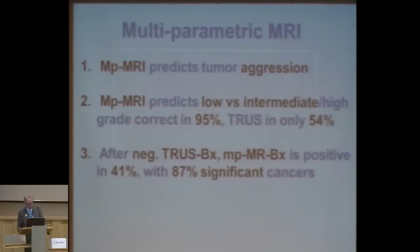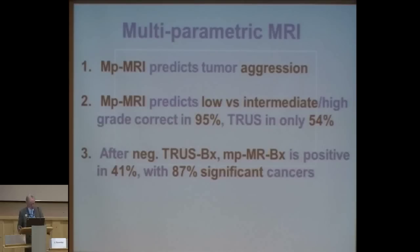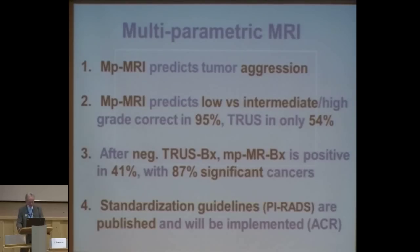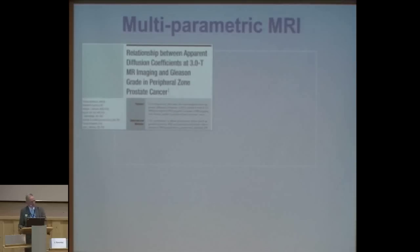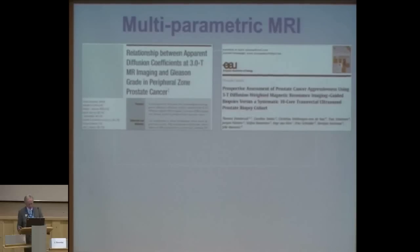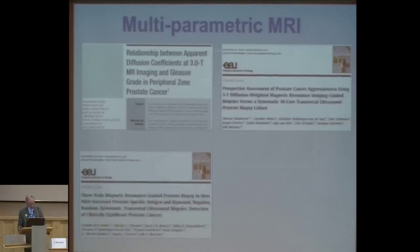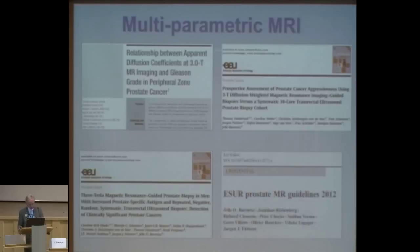After one negative TRUS biopsy, MR-guided biopsy targeting the darkest place on the ADC map is positive in 41%, with 87% significant cancers. Furthermore, standardization guidelines are being published and will be implemented by the American College of Radiology this year — a European-US approach. These papers cover the relation between diffusion and tumor aggressivity, MR imaging versus TRUS biopsy compared to prostatectomy, MR-guided biopsy in negative TRUS biopsy cases, and the guidelines — two in radiology journals and two in European Urology.